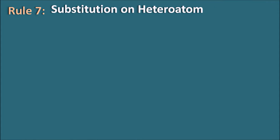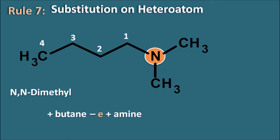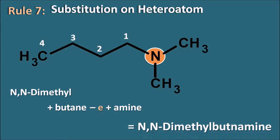Rule 7: substitution on a heteroatom. Example: amine is the principal functional group in a tertiary amine. Numbering starts from the carbon attached to the amine: 1, 2, 3, 4. The nitrogen has two methyl side chains, indicated as N,N-dimethyl. The 4-carbon chain is butane; replacing '-e' with '-amine' gives the name N,N-dimethylbutanamine.